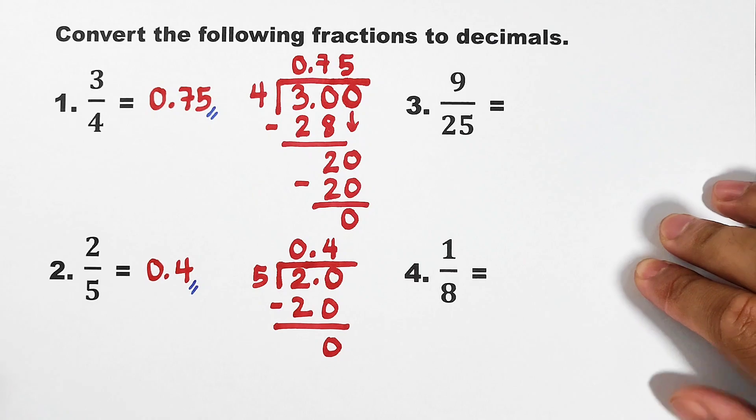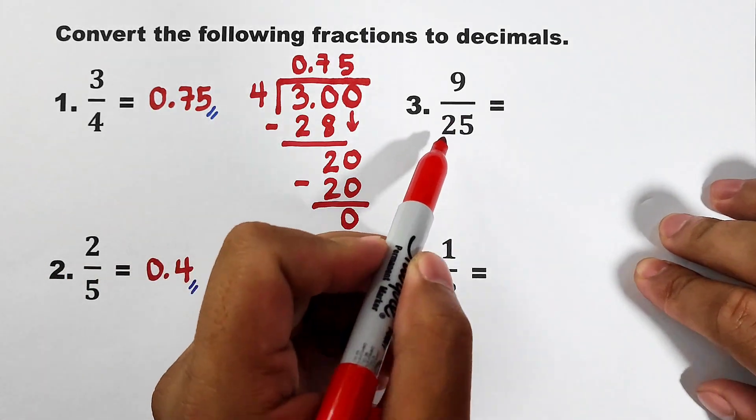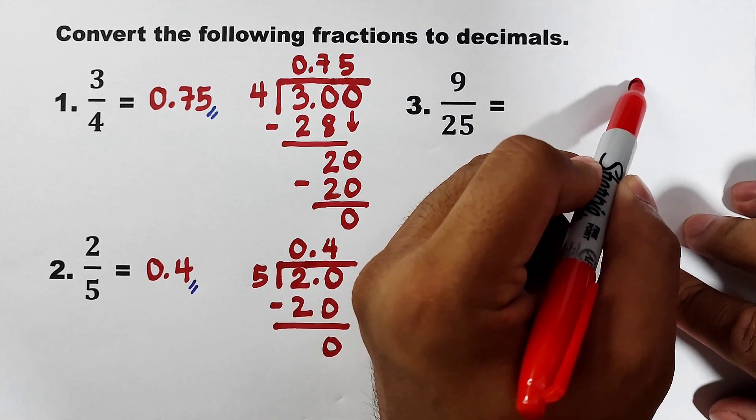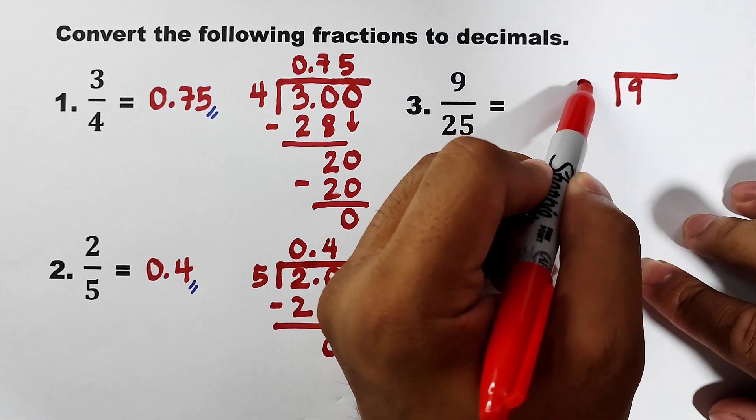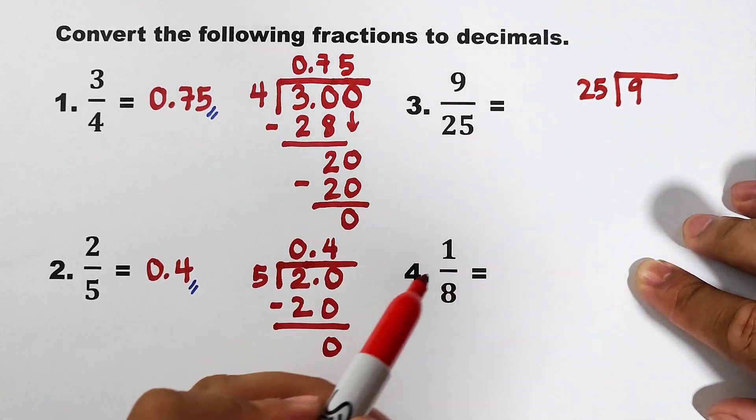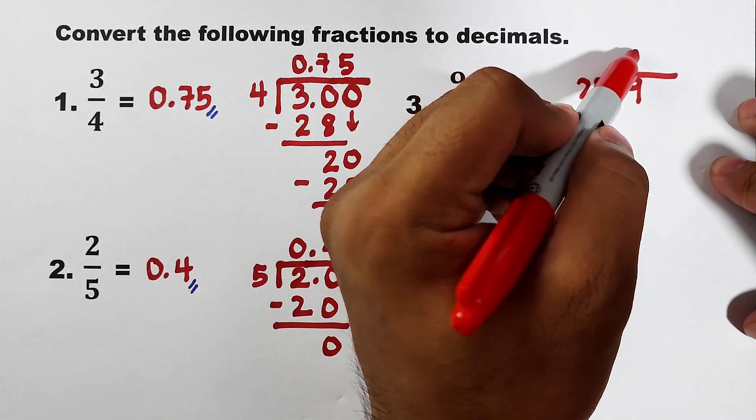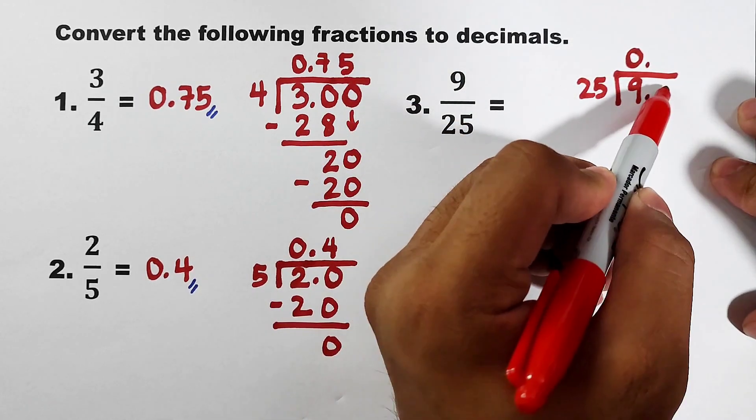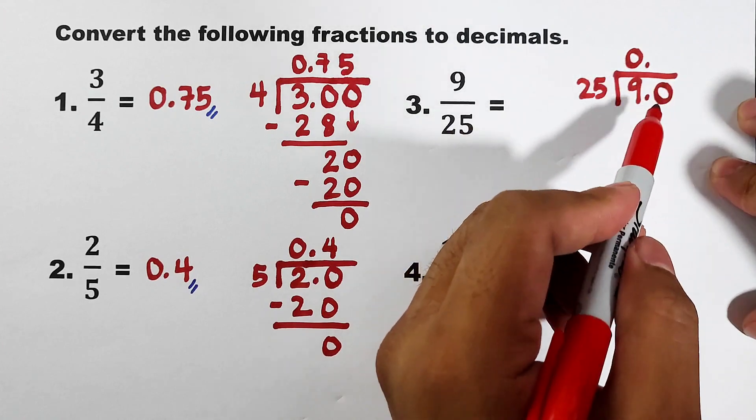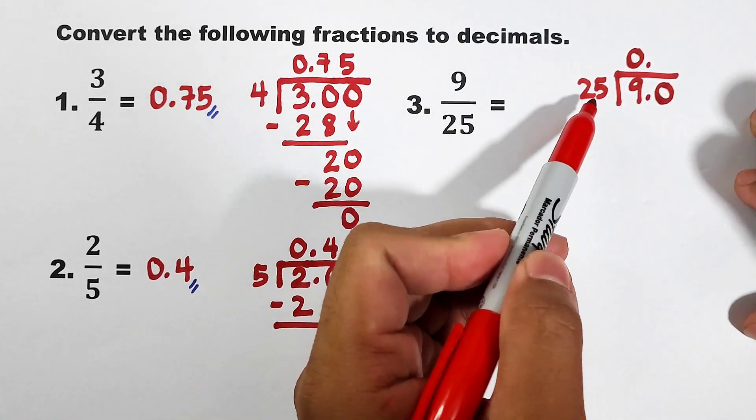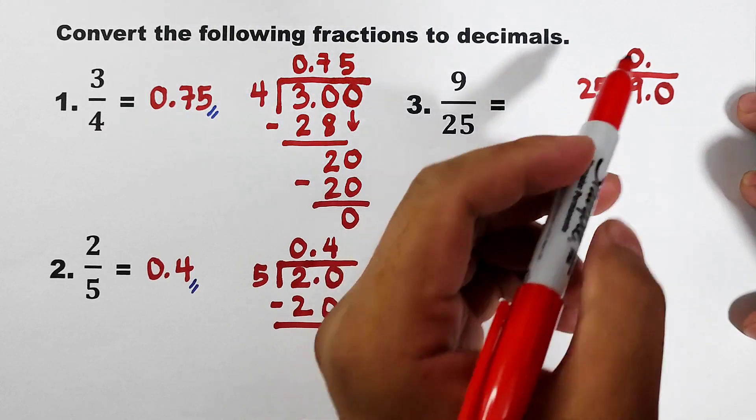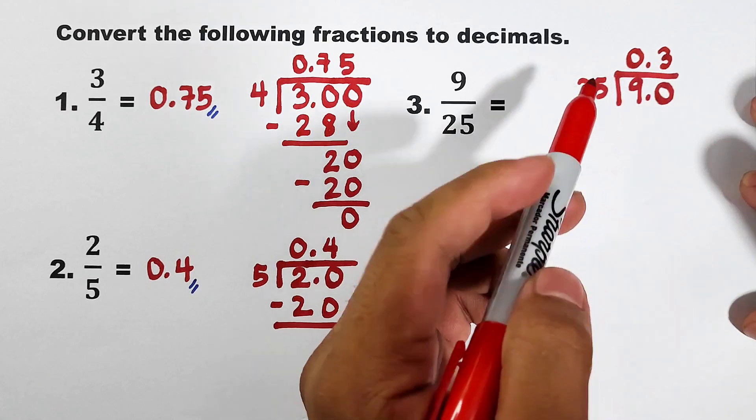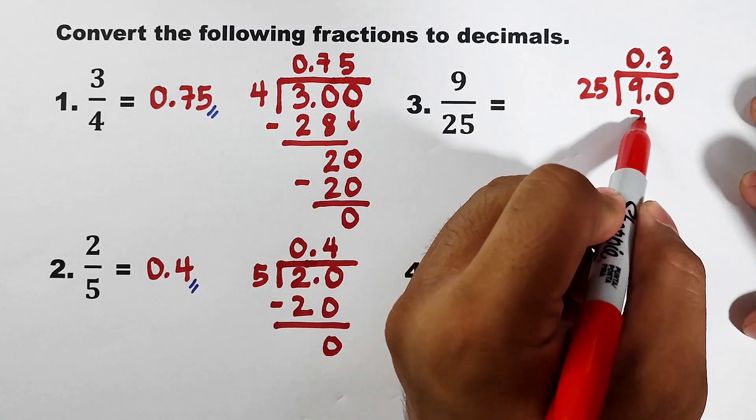Okay. Let's start with number 3. What we have here is 9 over 25. We will divide 9 by 25. So, 9 divided by 25 is 0. And as you can see, we will extend this one. We put in 0 here. So, we can have 90. 90 divided by 25 is 3 because it has 3 twenty-fives. 3 times 25 is 75.